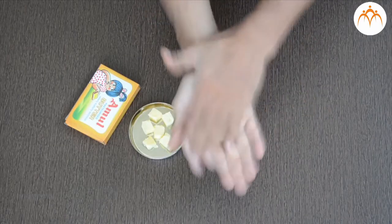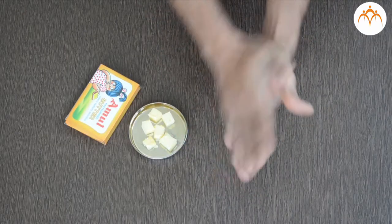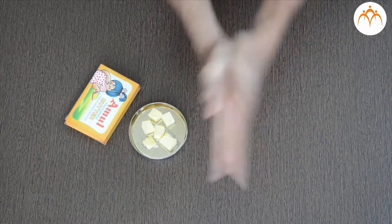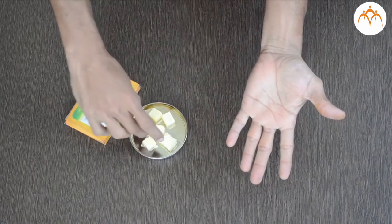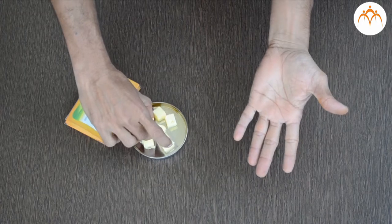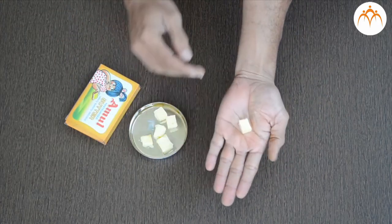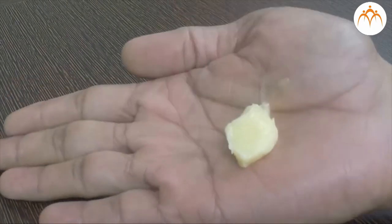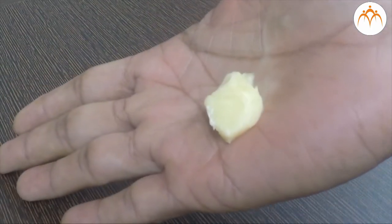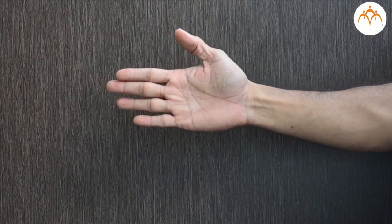Friction also produces heat. If you rub your hands together quickly, you will feel them get warmer. If I rub my hands and then place the butter, it melts quickly.